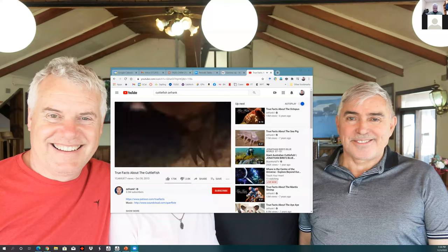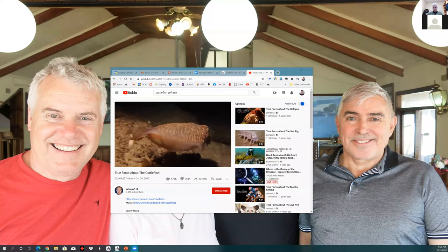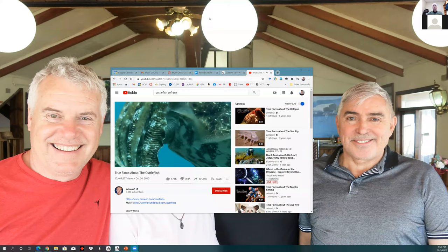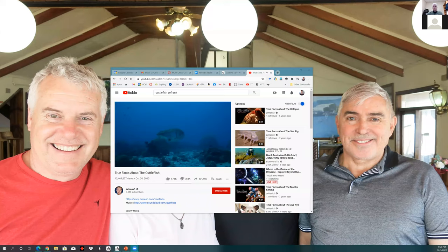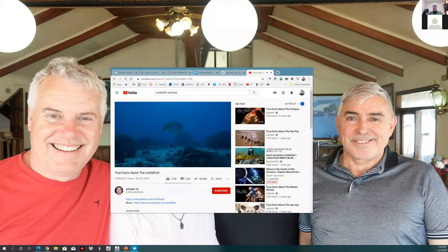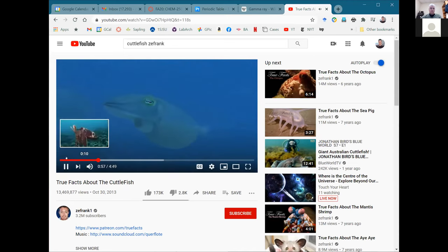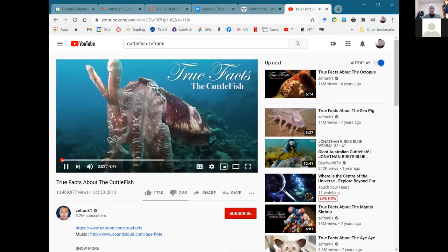To move through the ocean, the cuttlefish has a wavy wavy fin that surrounds its mantle. It also has a siphon, a muscular tube it can splurge water out of for fast propulsion. Imagine trying to move by vomiting out of a giant straw and flapping your skirt around very, very fast. True fact.